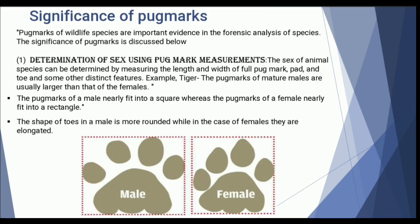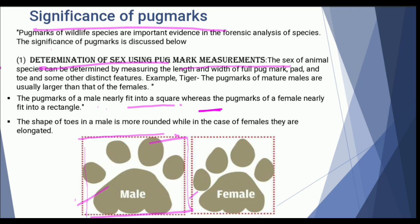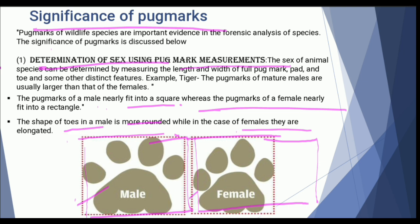Pug marks are significant and essential for sex determination. The pug mark of a male can be fit into a square, whereas the pug mark of a female fits into a rectangle. The shape of the toe also differs: male toes are more rounded, while female toes are elongated. These visual differences allow forensic investigators to determine the sex of the animal from its pug mark.